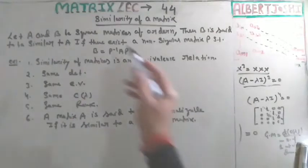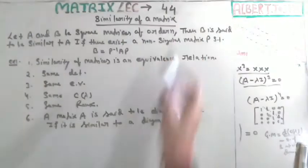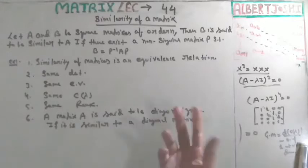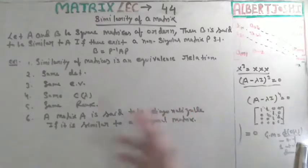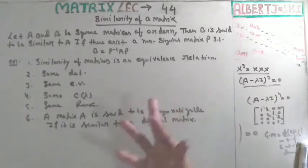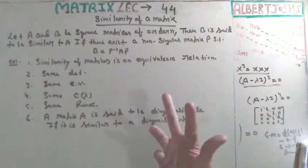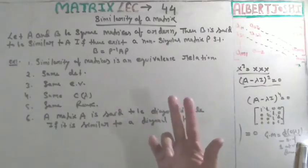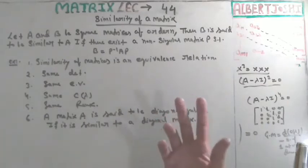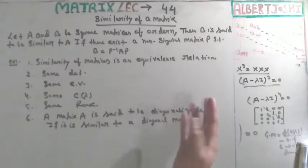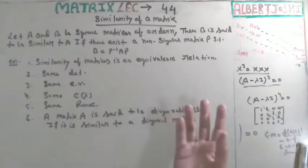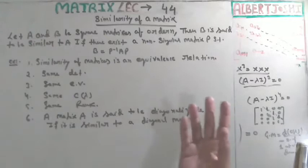This is lecture number 44 and today we are discussing the similarity of a matrix. If two matrices have the same entries you can say that both are similar, but sometimes you can face the problem of deciding whether two matrices are similar or not.